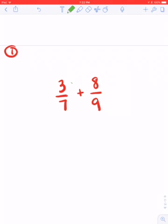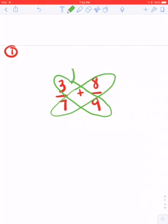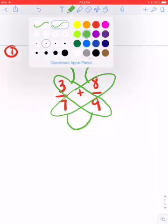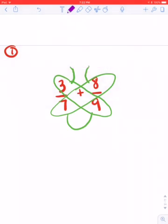So I'm going to go ahead and set up my butterfly. I'm going to set up my two wings, the antennas, and then the bottom. And then I'm going to go through and set it up so I can get my multiplying. So if I look in this direction, 3 times 9 is 27. In the other direction, 7 times 8 is 56.